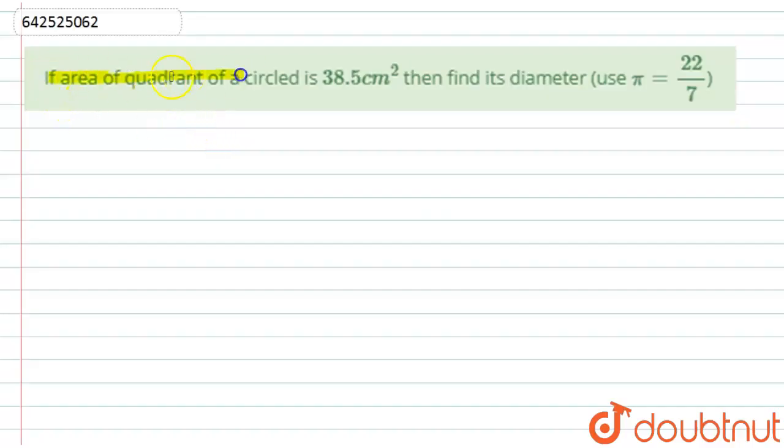Here we have: if the area of quadrant of a circle is 38.5 centimeter square, then find its diameter. Use π equals 22 by 7. So let us start with this solution.